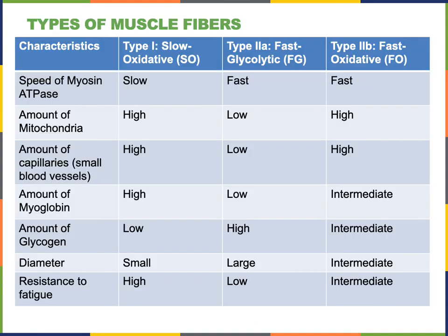Muscle fibers are classified into three major types. Type 1 slow oxidative fibers have a relatively slow myosin ATPase and primarily rely on aerobic cellular respiration to provide ATP. Fast glycolytic fibers, or type 2a fibers, have a fast myosin ATPase and primarily rely on anaerobic cellular respiration to provide ATP.